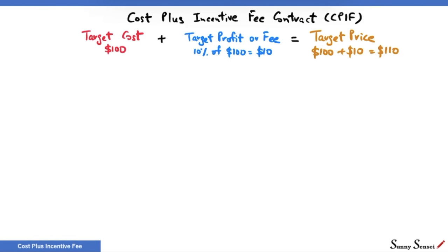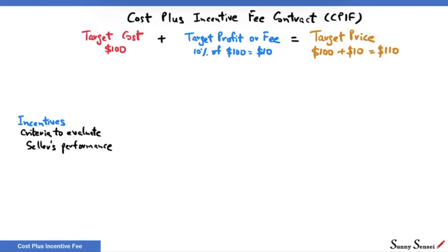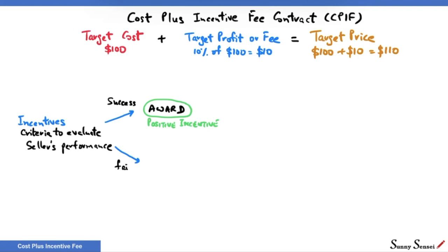This contract also defines incentives. These are objective criteria to evaluate the seller's performance, similar to what we have in fixed price incentive fee contracts. If the criteria are met, the seller gets an award — a positive incentive. If the criteria are not met, the seller faces a penalty — a negative incentive.